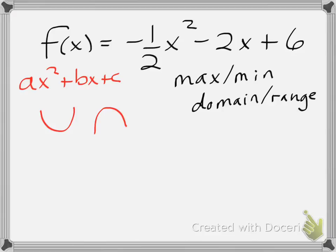First of all, we can determine if it has a maximum or minimum simply by looking at the equation. Specifically, we'll look at the a value. In this case, it's a negative one half. All I need to concern myself with is that it's negative. If it's negative, that means that we have a graph that opens down.